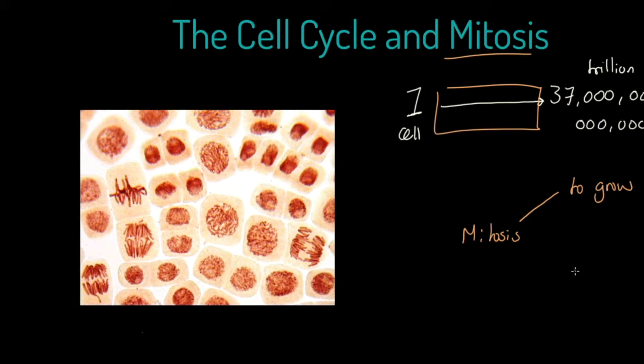Secondly, mitosis is central to repair damaged tissue. Think about the last time you cut your finger or grazed your knee. At some point afterwards, a series of skin cells have effectively regrown or repaired that break in the skin, and those skin cells have been divided through the process of mitosis. Finally, mitosis is also at the heart of asexual reproduction.